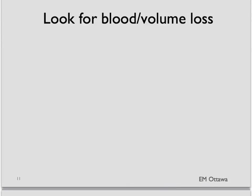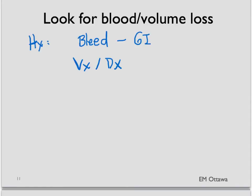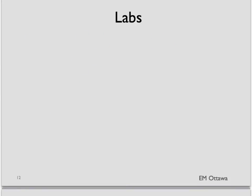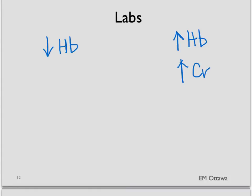On history and physical examination, we'll be looking for any focus or sources of blood loss or volume loss. It could be asking about any bleeding history from the GI source, the GU source, any vomiting or diarrhea, or any history of trauma. In terms of labs, the hypovolemic shock patient might have a low hemoglobin if they've been losing blood. On the other hand, if all they've been losing is fluid, their blood will actually be hemoconcentrated, so their hemoglobin might look much higher. Their creatinine might also be higher as well. Please remember to do a pregnancy test on all childbearing-aged women, since a ruptured ectopic pregnancy can cause significant blood loss and therefore shock.